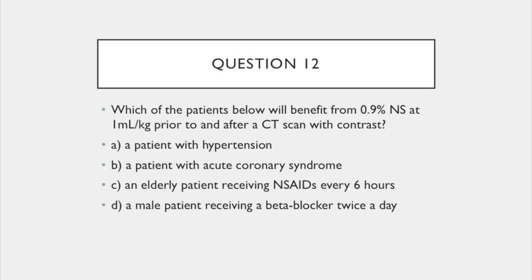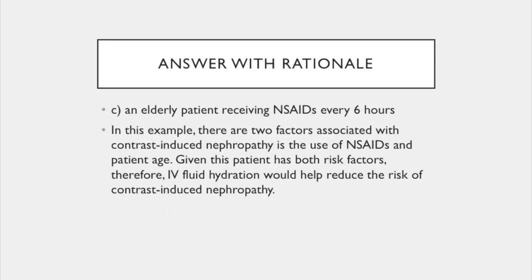Question 12. Which of the patients below will benefit from normal saline at 1 milliliter per kilogram prior to and after a CT scan with contrast? A. A patient with hypertension. B. A patient with acute coronary syndrome. C. An elderly patient receiving NSAIDs every 6 hours. Or D. A male patient receiving a beta blocker twice a day. The answer is C: an elderly patient receiving NSAIDs every 6 hours. In this example, there are two factors associated with contrast-induced nephropathy — the use of NSAIDs and the patient's age. Given this patient has both risk factors, IV fluid hydration would help reduce the risk of contrast-induced nephropathy.